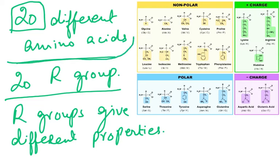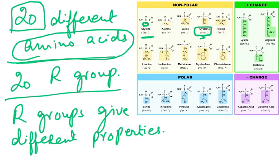The 20 amino acids are different because they have different R groups. In glycine the R group is H — we use the first three letters, so it's called GLY. Then alanine (ALA), valine, and cysteine — cysteine is very important because it has sulfur in it. There are only two amino acids with sulfur: methionine and cysteine.